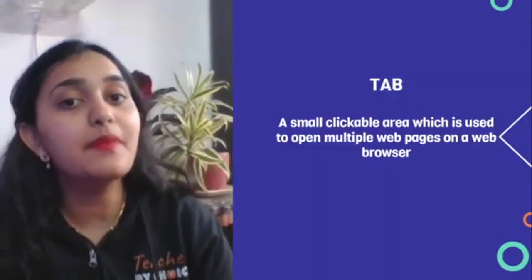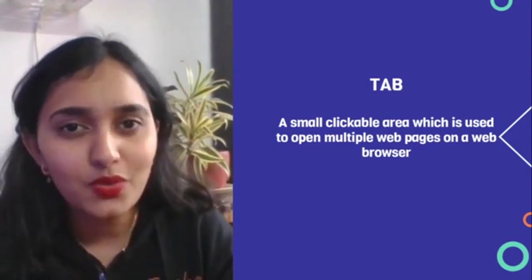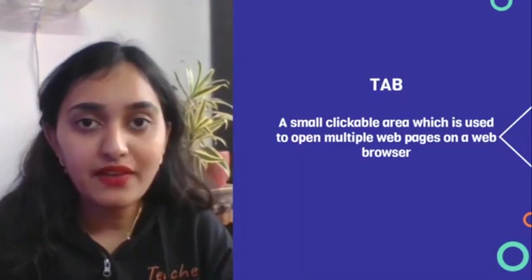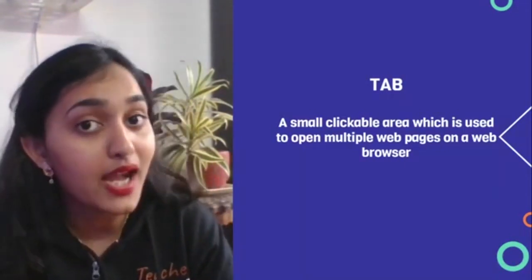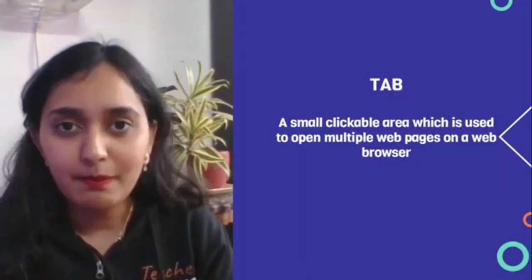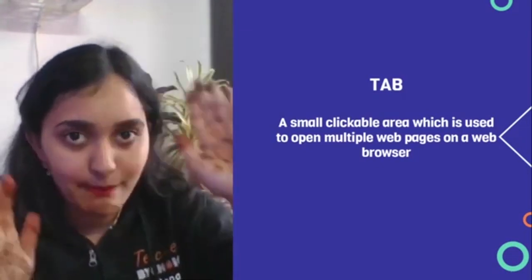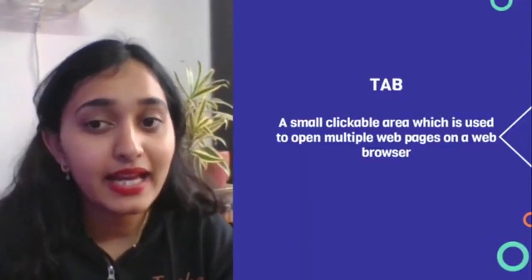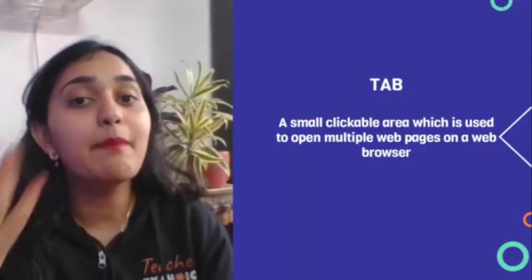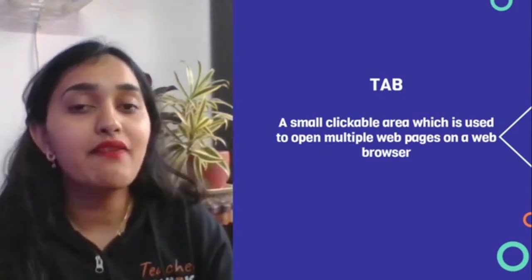Next is tab. Many times I have told you that if you want to play a video and open menti.com at the same time, you open a new tab. How do we open it? Simple — you have opened Google Chrome, and at the top of the web page you can see a little plus sign clickable area — that is called a tab. You click it and a new web page opens. This way we can open many tabs and many pages at once.